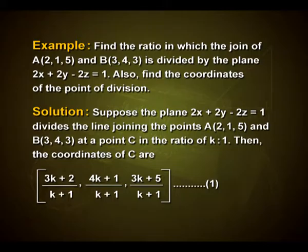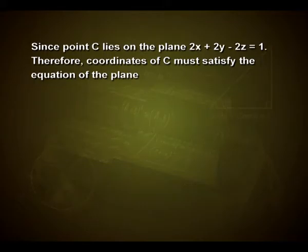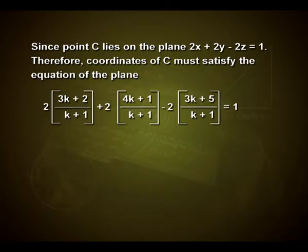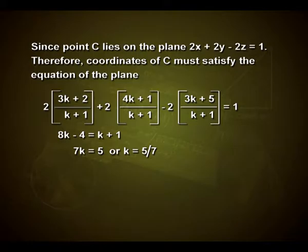Since point C lies on the plane 2x + 2y − 2z = 1, the coordinates of C must satisfy the equation of the plane. That is: 2(3k+2)/(k+1) + 2(4k+1)/(k+1) − 2(3k+5)/(k+1) = 1, which on solving gives 8k − 4 = k + 1, that is 7k = 5, or k = 5/7.